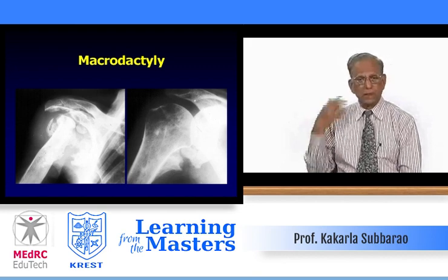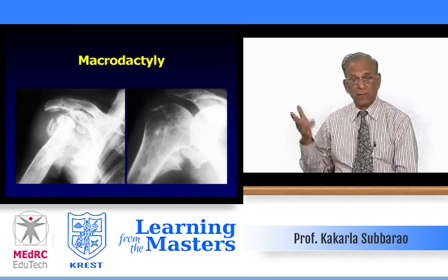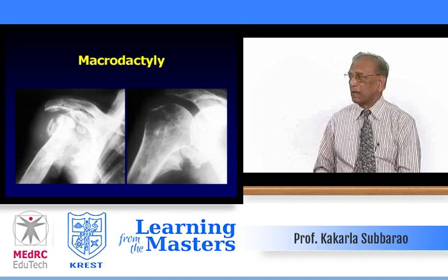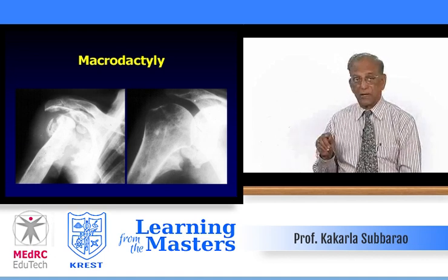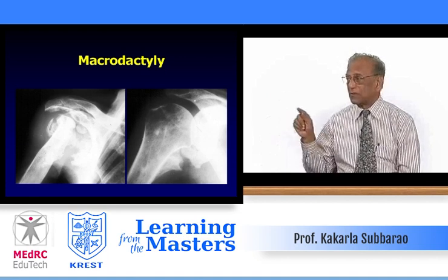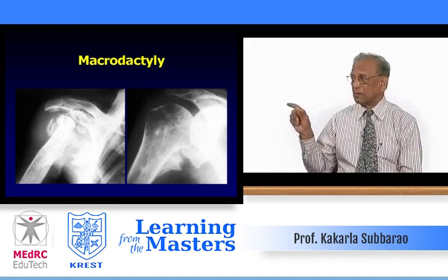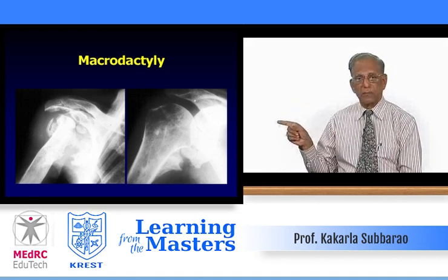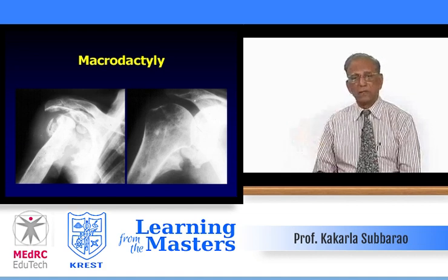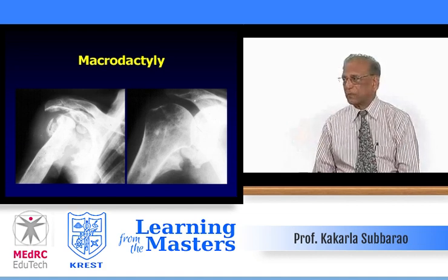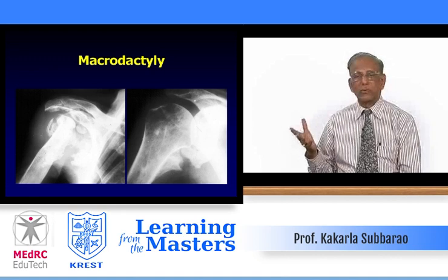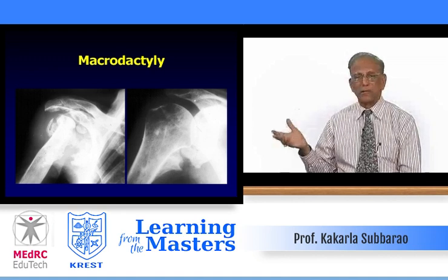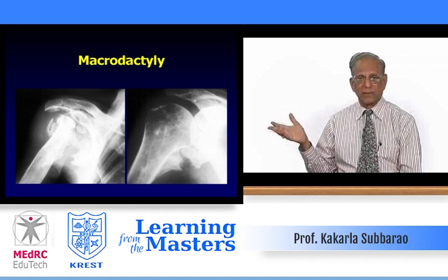In this particular case, syringomyelia or any lesion in the cervical cord or even the brain can produce this. On your right side, there is a triangular type of calcification on both the scapular surface and the medial surface of the humerus. It is dense ossification. This is post-traumatic. This patient has hemiplegia and post-traumatic myositis ossificans.